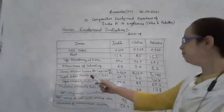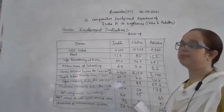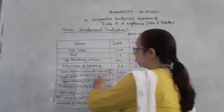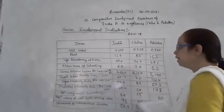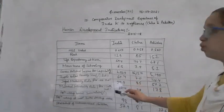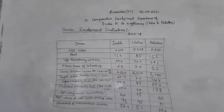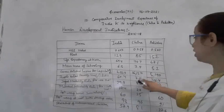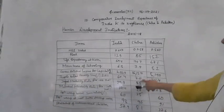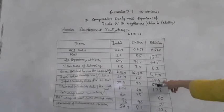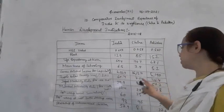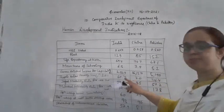Next is people below the poverty line, given in percentage. In India around 60.4% of people are below the poverty line. Only about 7% of people in China are below the poverty line, and in Pakistan it is 46.4%.